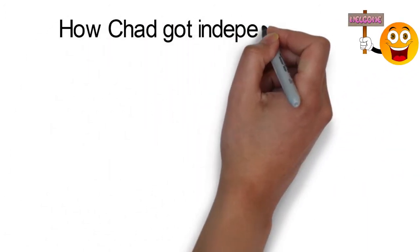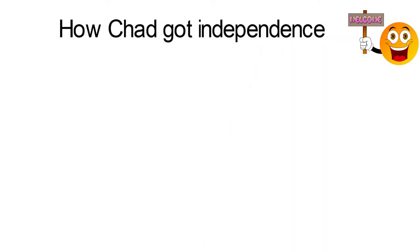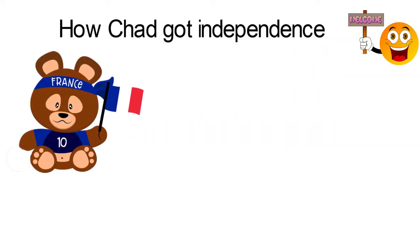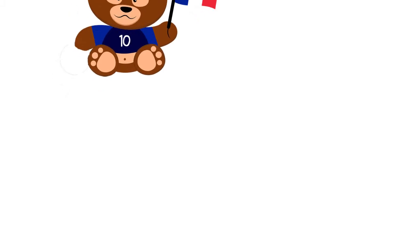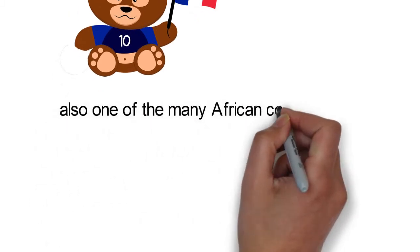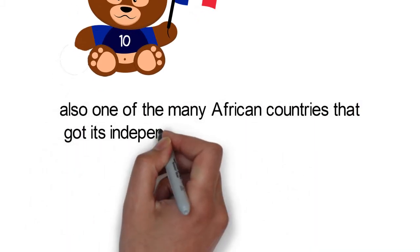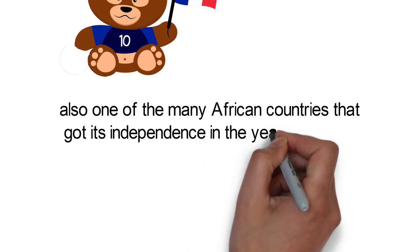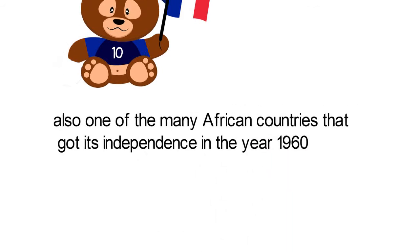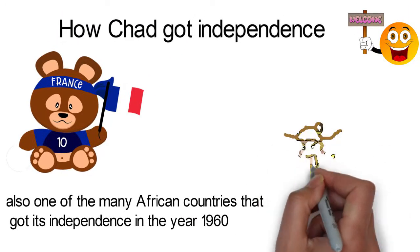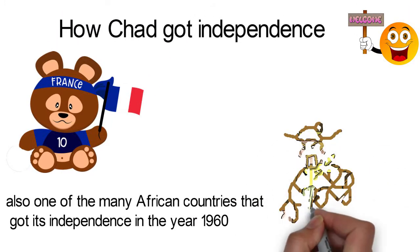How did Chad get independence? Chad is one of the African countries that was colonized by the French. It is also one of the many African countries that got its independence in the year 1960. Let us consider the events that led to its independence.